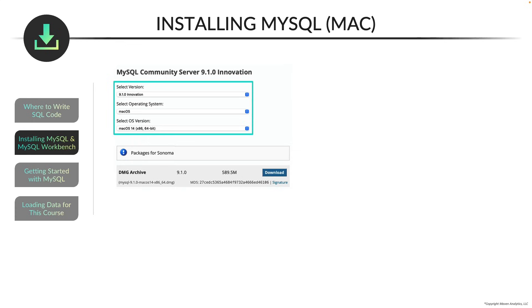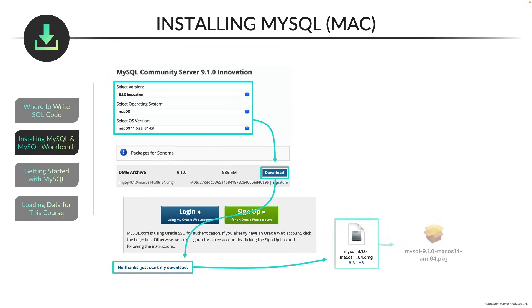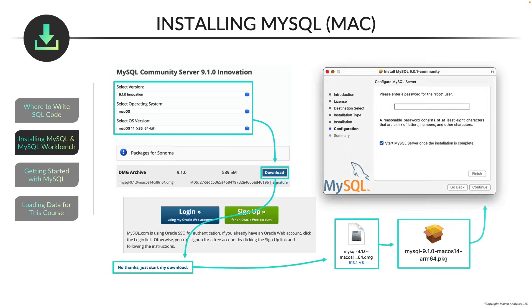Once you select your version, OS, and OS version, you'll see a line called DMG Archive at the bottom, and to the right of that there will be a download button. Click that download button and it will direct you to another webpage. You'll see buttons for logging in and signing up, but you don't have to do either — just click 'No thanks, just start my download,' and that will download the DMG file onto your computer. Double click on that and it will turn into a .pkg file.